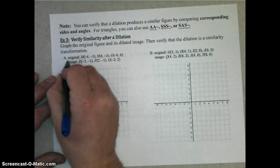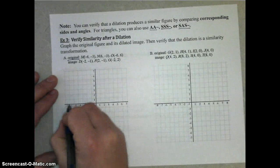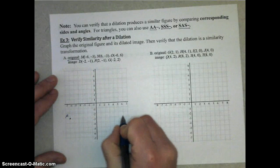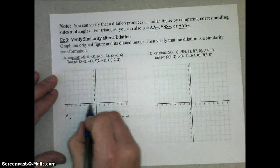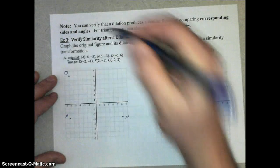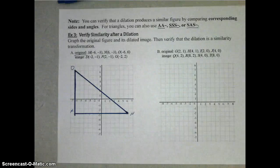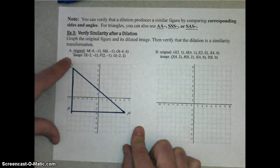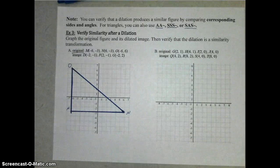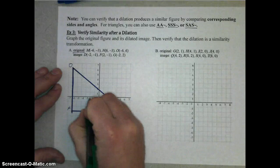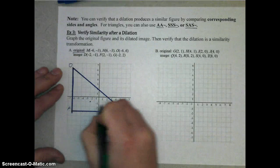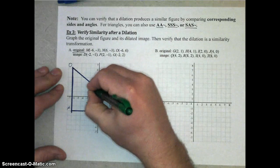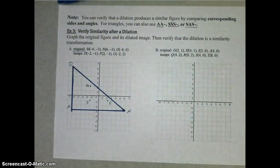On part A, M is at (−6, −3), N is at (6, −3), and O is at (−6, 6). When we graph it, we get triangle MNO, which is a right triangle because MN is horizontal and MO is vertical. Then we plot the image coordinates: D at (−2, −1), F at (2, −1), and G at (−2, 2). We plot those coordinates, graph them, and get the smaller triangle DFG.